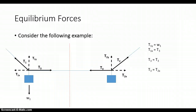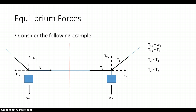Remember that nothing is moving in this system. Therefore, T2x has to be equal to T3 from the other side — these are equal to each other, so there is no movement in the x direction. We also have a weight pulling downward, which we call W2. Because the system is in equilibrium and nothing is moving in the y direction, W2 has to be equal to T2y.